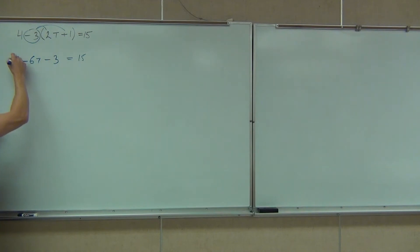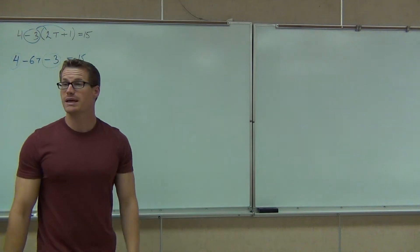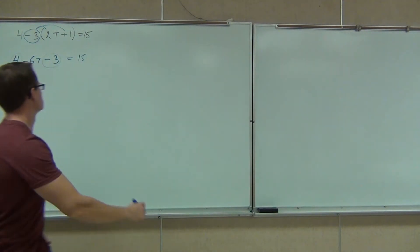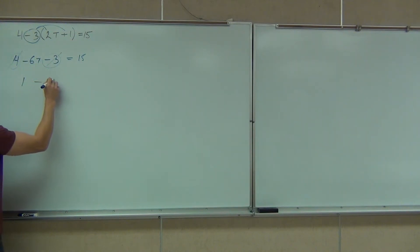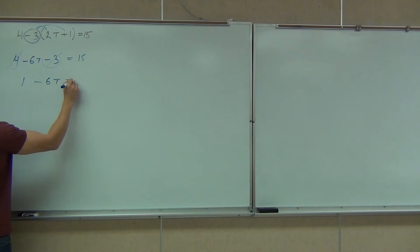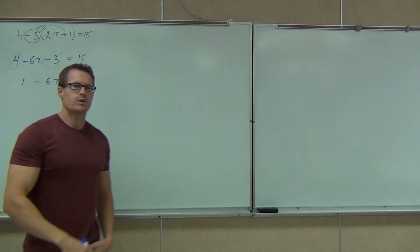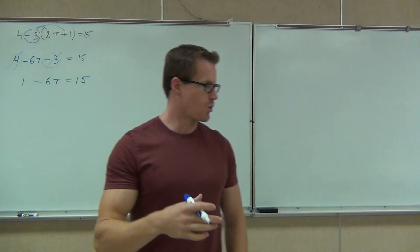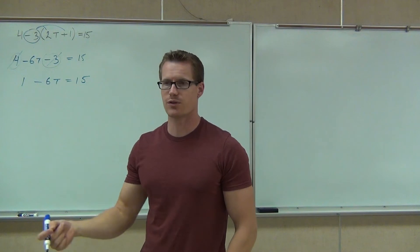Over here I do have some like terms. I see the 4 and the negative 3. If I combine 4 and negative 3, what do I get? One. One, and then — perfect. Now we double-check to make sure we don't have any more like terms. We don't. We're good to go. We're ready to solve this.